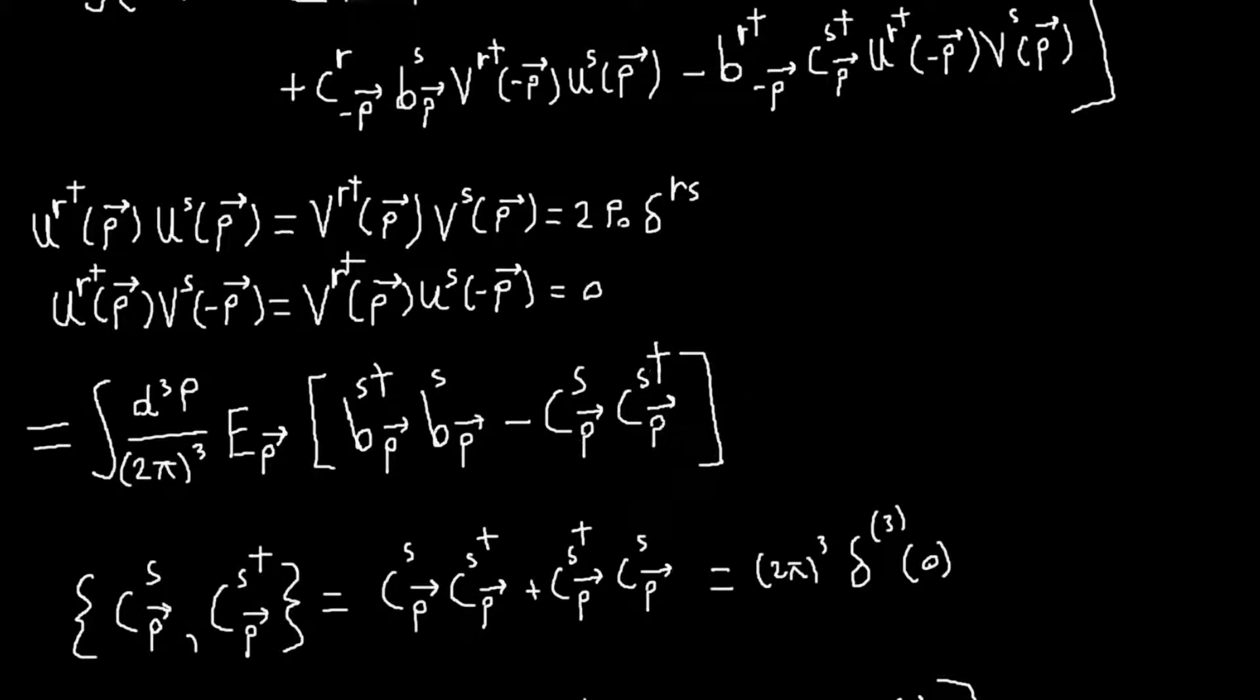And we said that was basically, instead of doing that, we could just normal order things by moving all the operators with a, all the creation operators to the left and all the annihilation operators to the right. And we called that normal ordering.